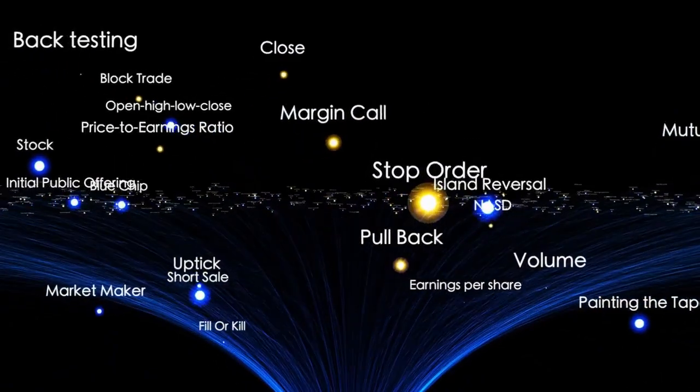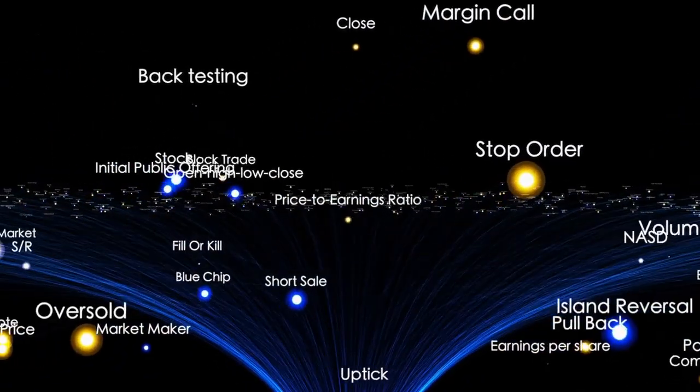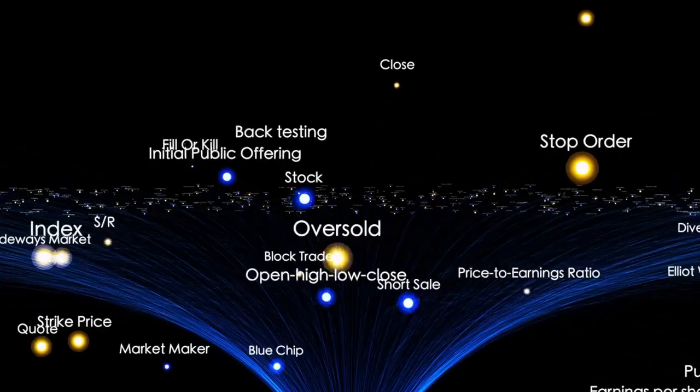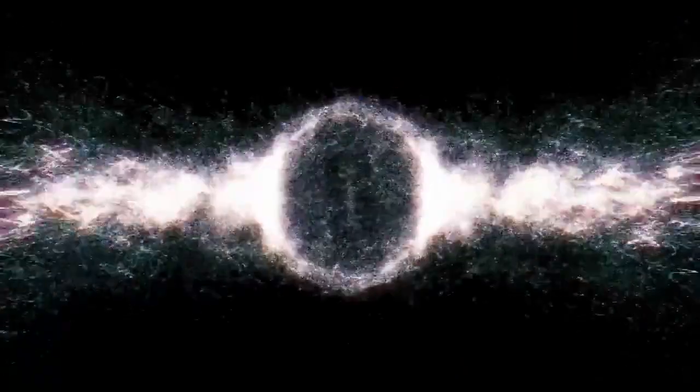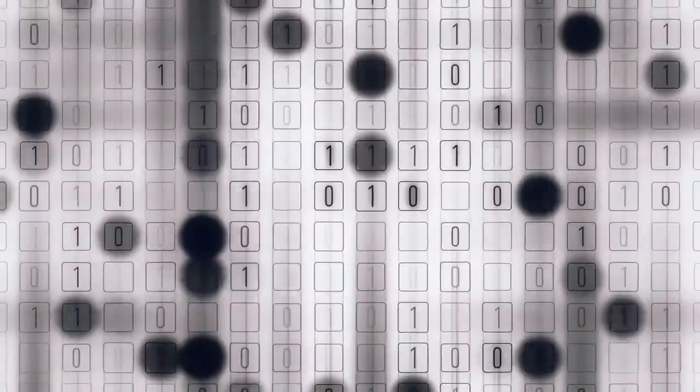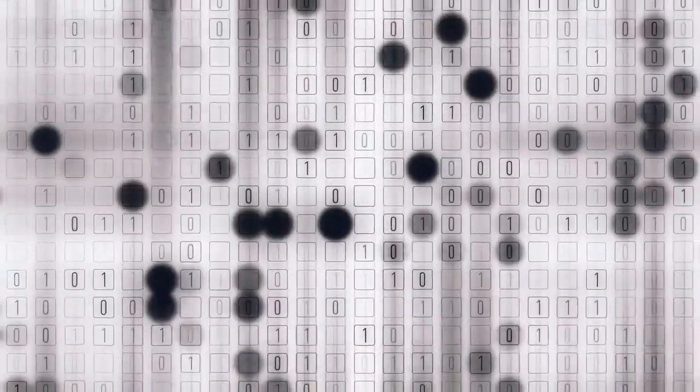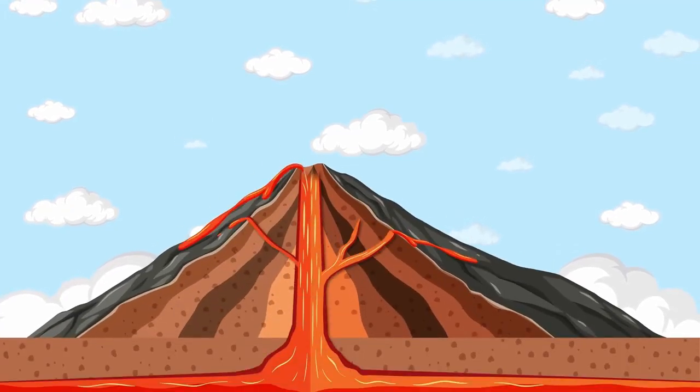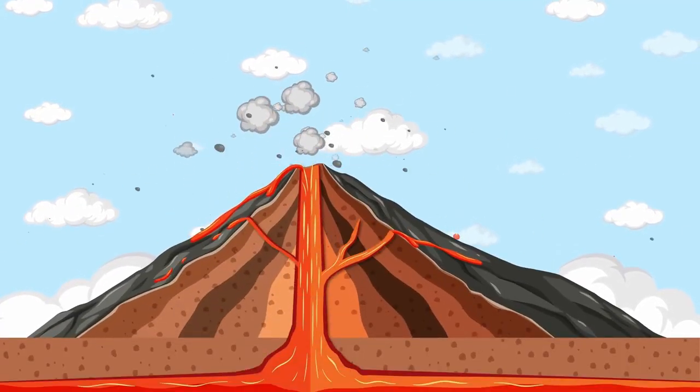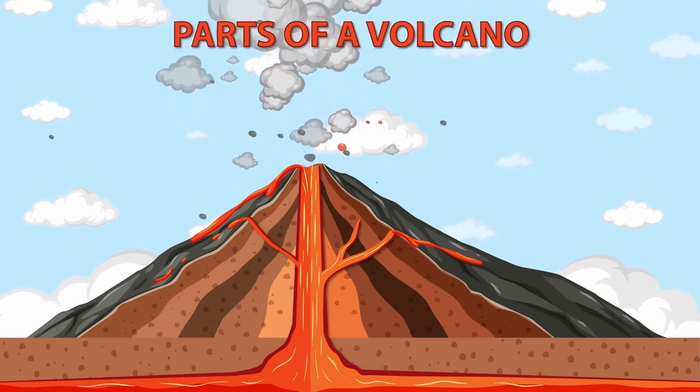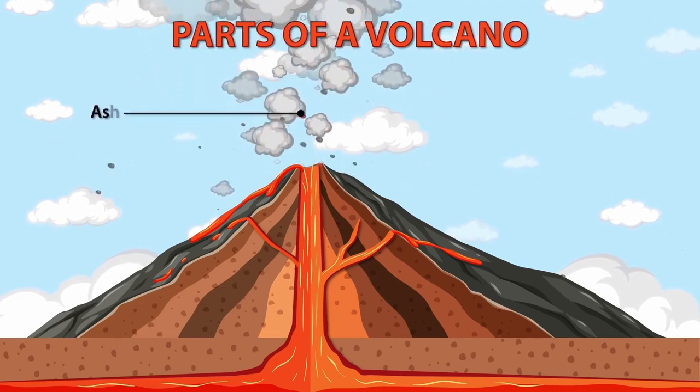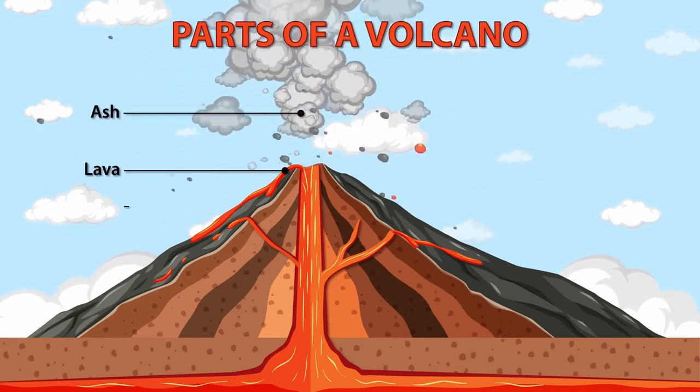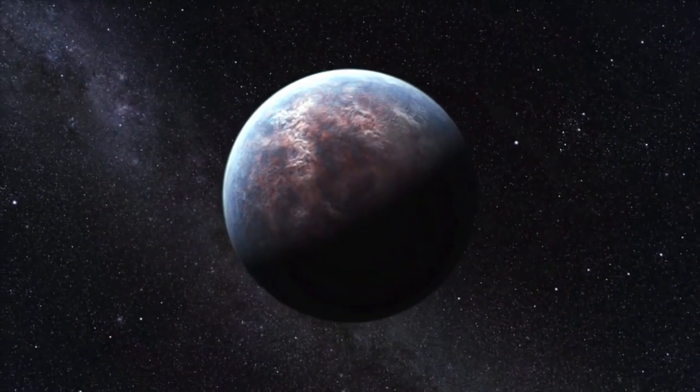This one discovery has sent shockwaves through cosmology. It fundamentally challenges our timeline of how the universe evolved. The fact that this bubble of emptiness, or really transparency, exists so early creates what scientists are calling a photon budget crisis. Basically, to ionize a bubble that big, you need a certain amount of high-energy photons, a budget of light. The way we thought early galaxies formed simply doesn't produce enough photons that quickly.